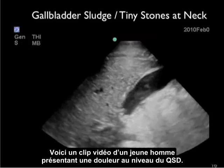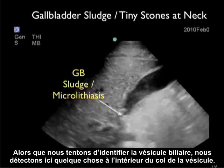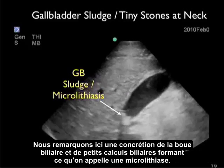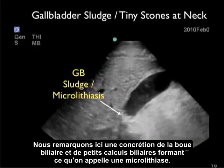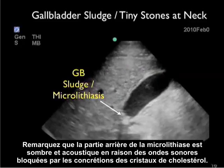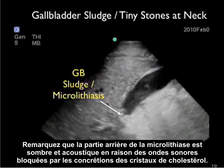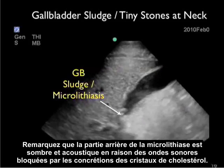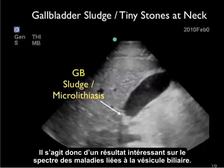Here's a video clip from a young male presenting with right upper quadrant pain. As we look through the gallbladder, we notice a finding within the neck of the gallbladder — a concretion of gallbladder sludge and also tiny gallstones known as microlithiasis. Notice that the microlithiasis has posterior acoustic shadowing due to the blocking of sound waves through the concretions of cholesterol crystals — an interesting finding on the spectrum of gallbladder disease.